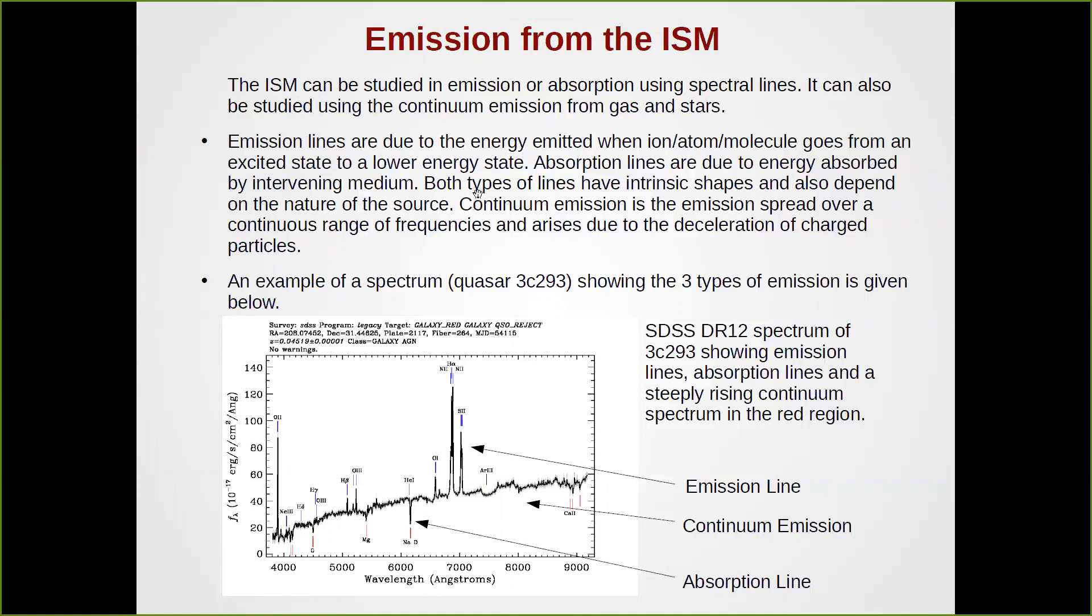Emission lines are given out when an atom, ion, or molecule goes to a higher excited state and then comes back to its ground state or an in-between state. It gives off photons and those photons we can see as emission lines. As they come towards us, they are often absorbed by dust or intervening medium. If it's absorbed by an intervening medium, then we can see what is called the absorption lines. Both these types of lines have their own characteristic shape, and we are going to discuss that in this lecture.